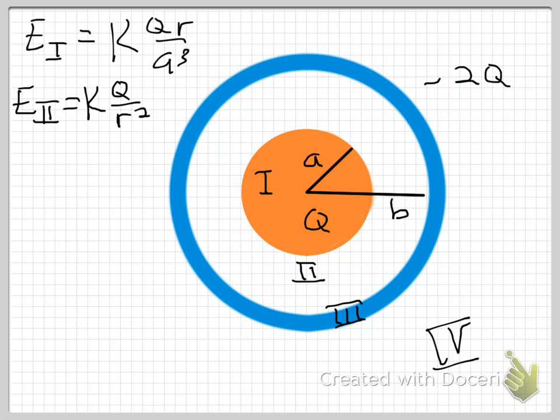So I've divided this configuration up into four regions. Region 1 is inside the insulating sphere, region 2 is in the gap between the sphere and the spherical shell, region 3 is inside the spherical shell, and region 4 is outside.